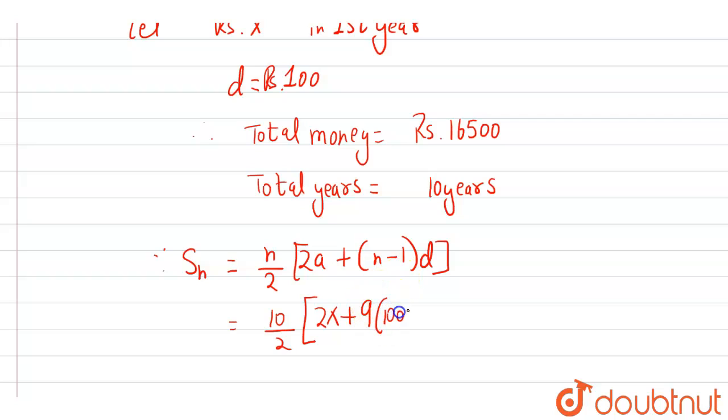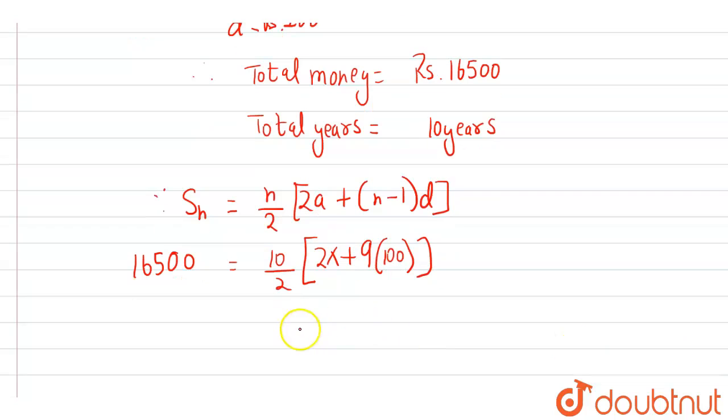We know the sum is 16,500, so from here we can find the value of x. Simplifying by dividing: 16,500/5 = 2x + 900.